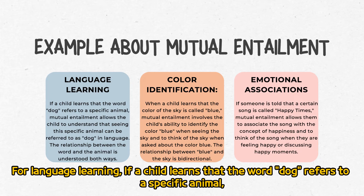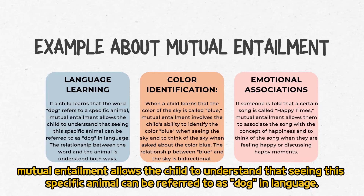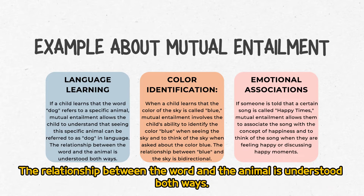Now let's look at some examples of mutual entailment. For language learning, if a child learns that the word 'dog' refers to a specific animal, mutual entailment allows the child to understand that seeing this specific animal can be referred to as 'dog' in language. The relationship between the word and the animal is understood both ways.